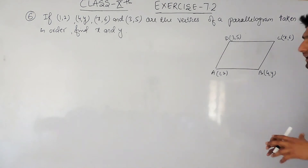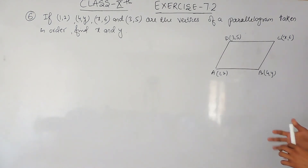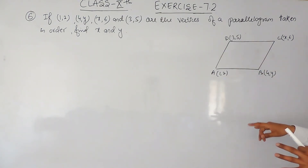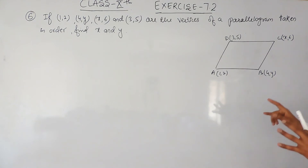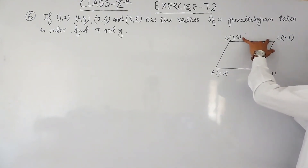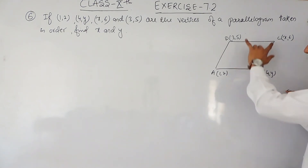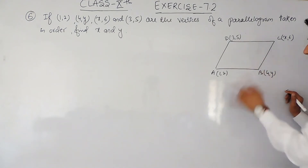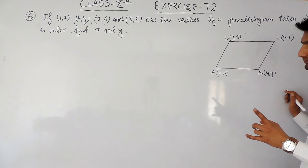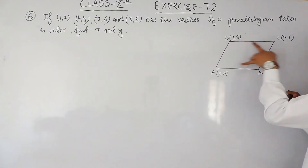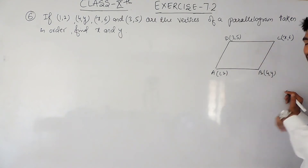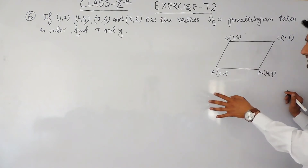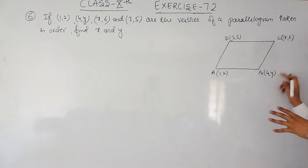Since this is a parallelogram, in a parallelogram opposite sides are parallel and equal. So you can find the distance between two pairs of opposite points. Because these two lines are of equal length, you can equate them and get a linear equation. Similarly, the distance between the other two lines must also be equal — equating those gives another linear equation. Solving those two linear equations simultaneously will give you the values of x and y.